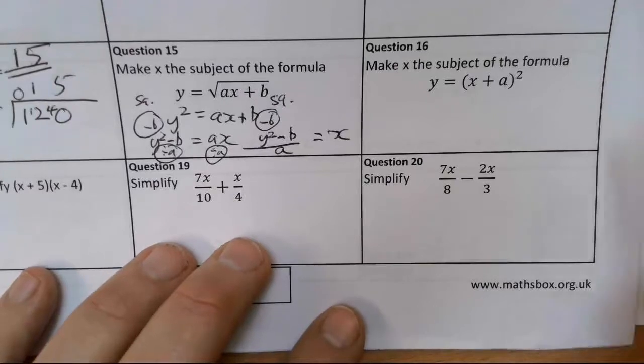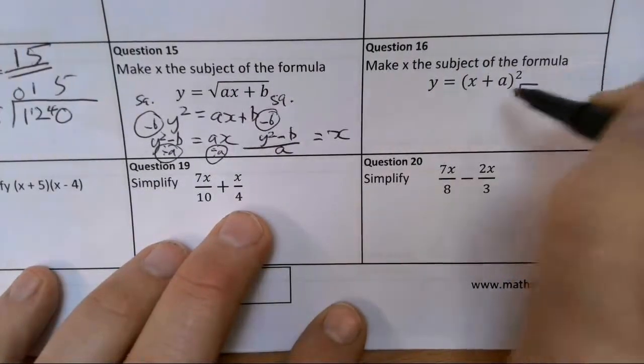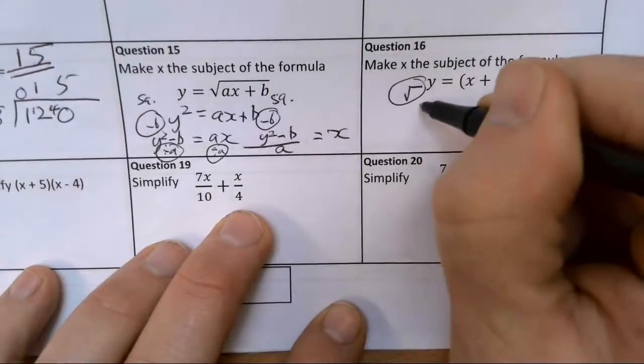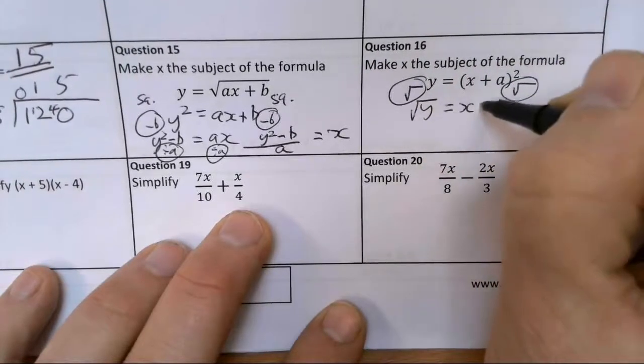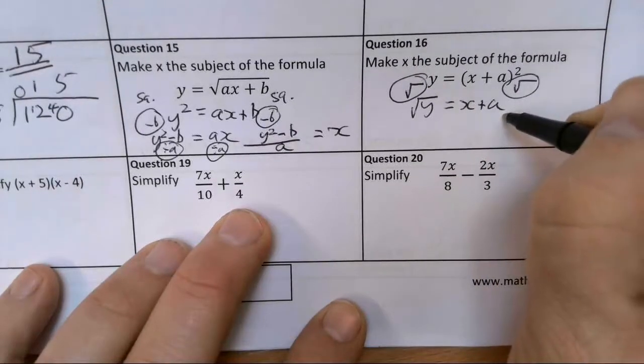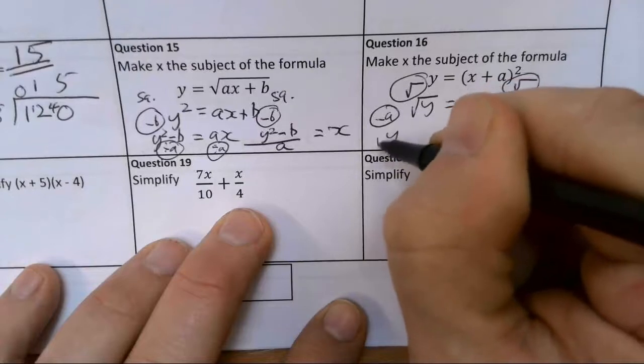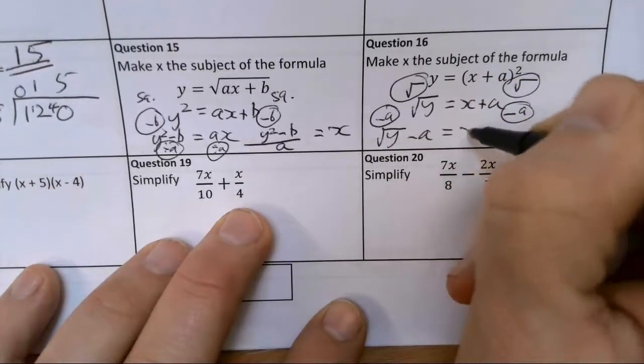Now this one, first thing I need to do is take the square root because it's the whole of that side which is being squared. So I've got the square root of y on this side and I've got x plus a on this side. And now I'm just going to take away a from both sides. So I've got square root y minus a equals x.